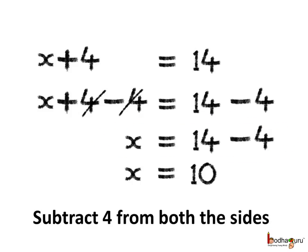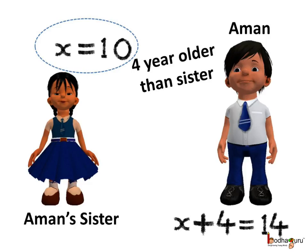And thus we get x equal to 14 minus 4. Now 14 minus 4 is 10. So x is equal to 10. What does it mean? Well it means Aman's sister's age is 10. So his sister is 10 years old.